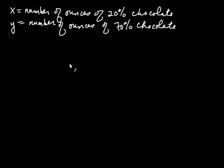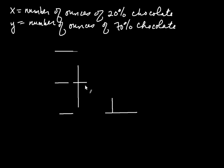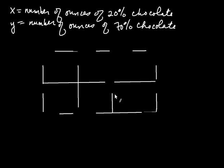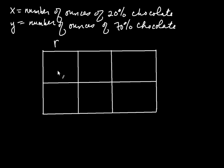We want to create a table to organize all the information — much like the table used in distance-rate-time problems. The table has three columns labeled R (rate), amount, and pure, and two rows. The rows are labeled according to what we're combining: weak chocolate and strong chocolate. Each cell has a meaning — for example, one cell is the amount of weak chocolate we're adding, another is the rate (percentage cacao) of strong chocolate, and another is the pure cacao contributed.